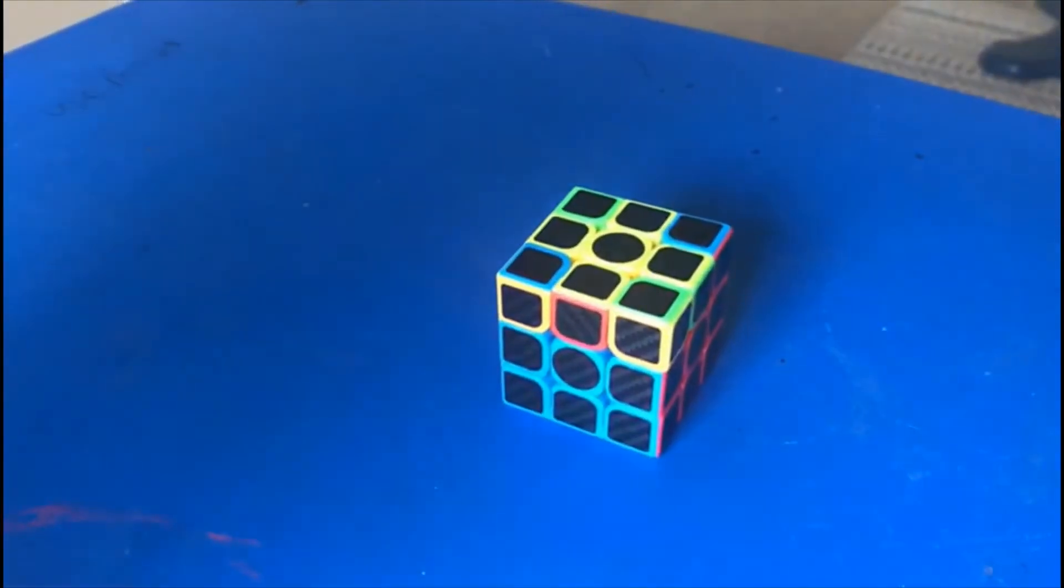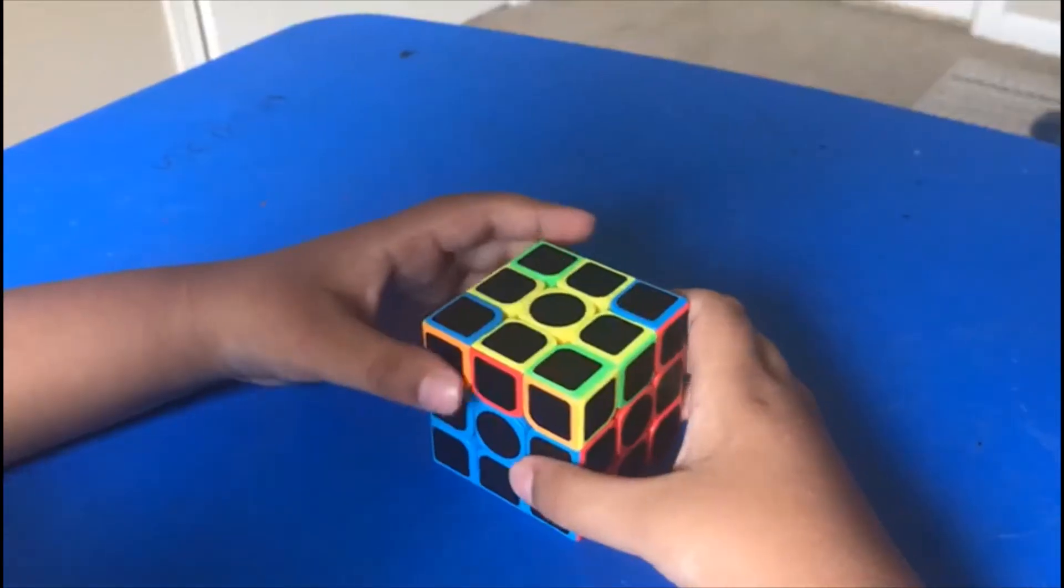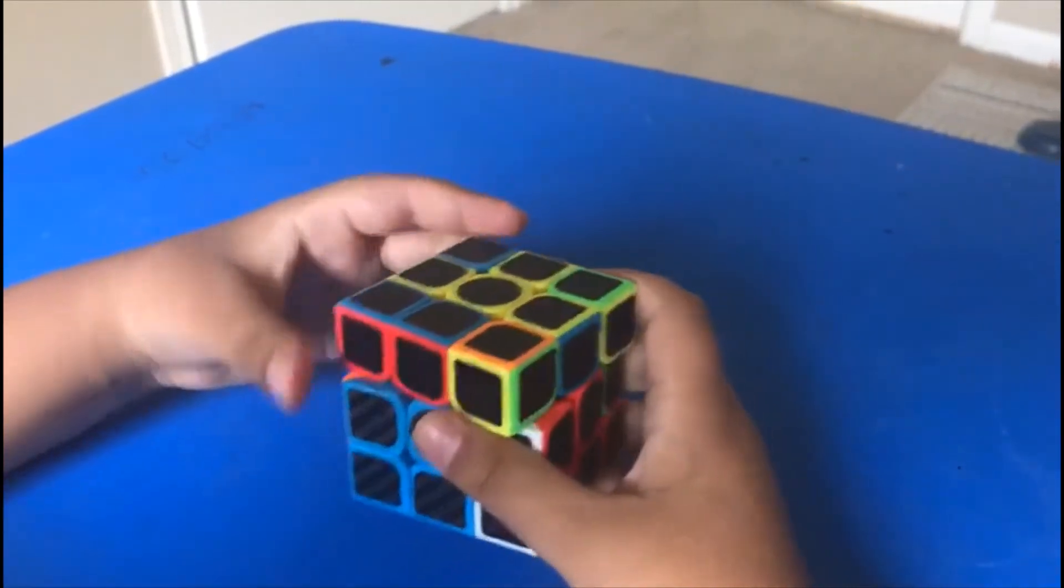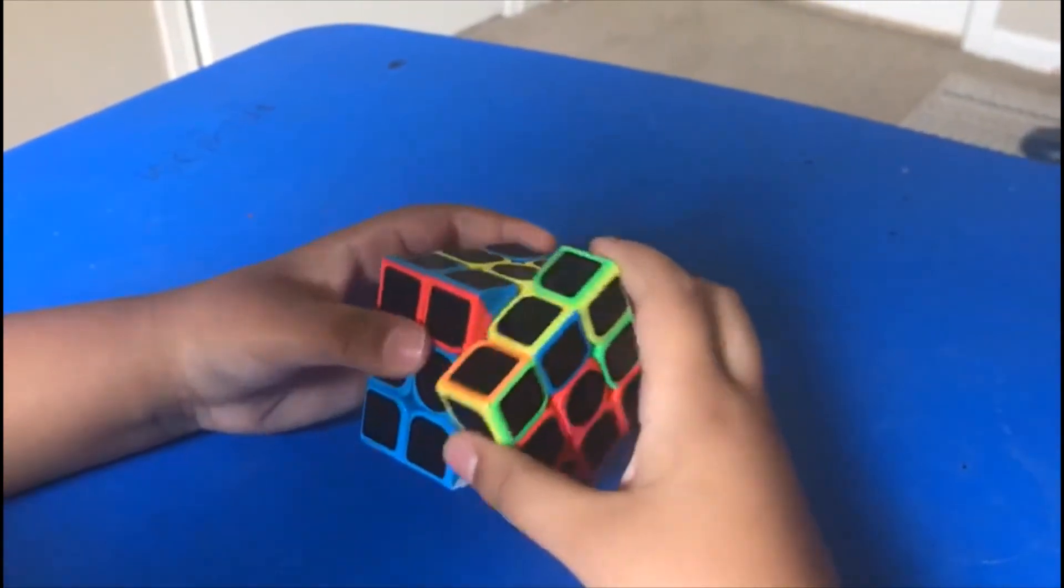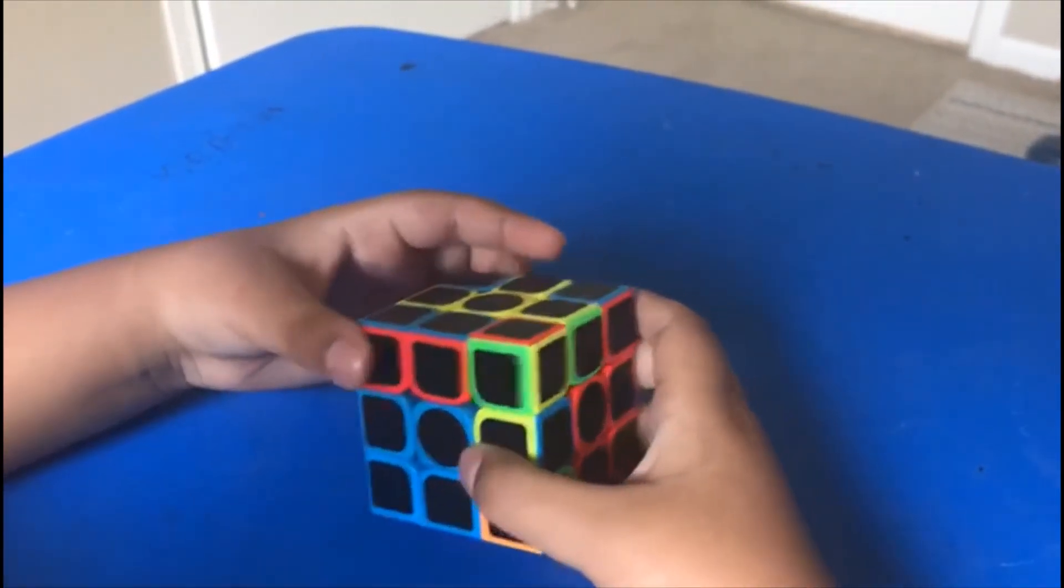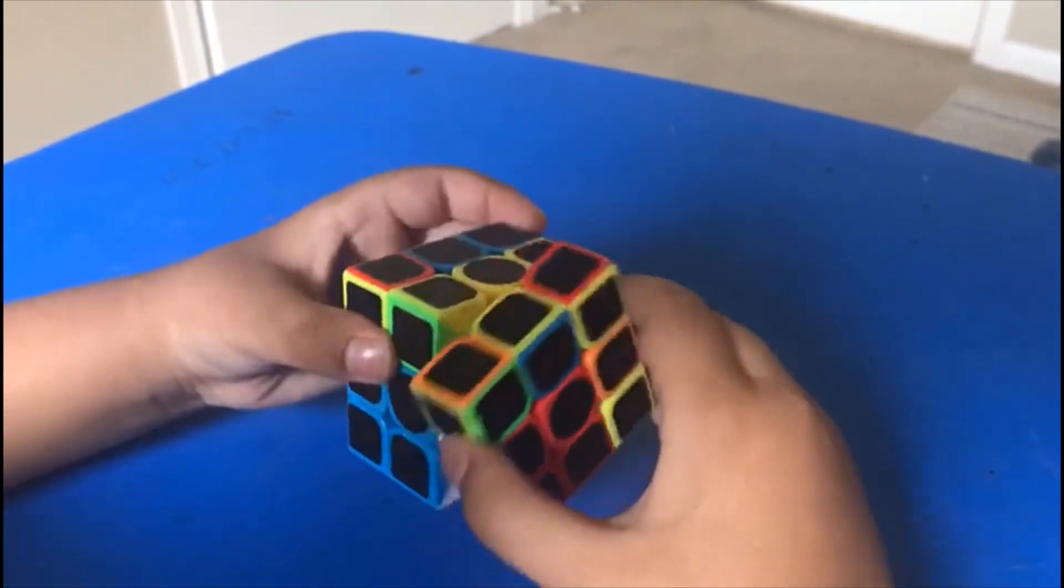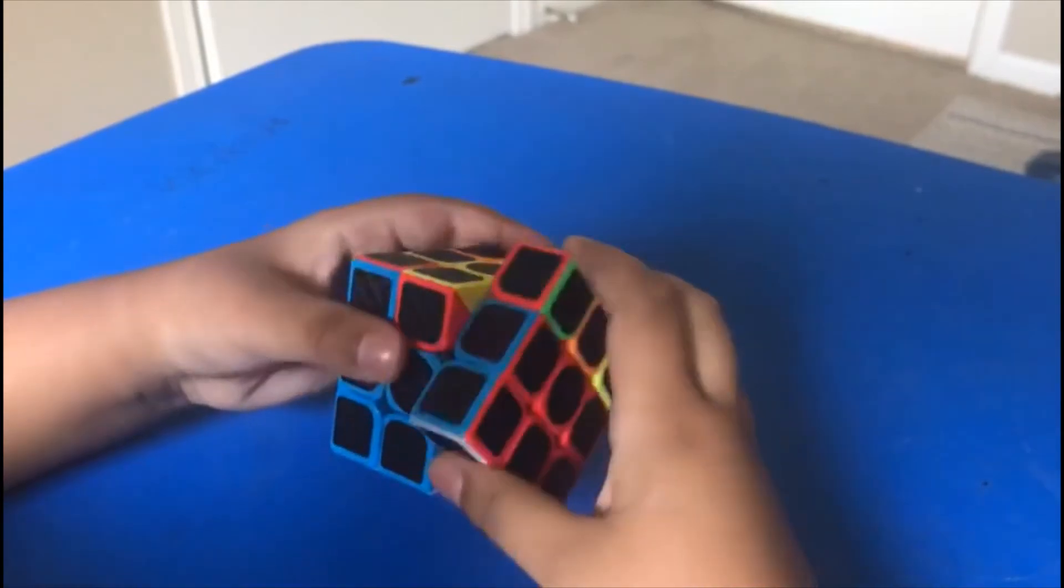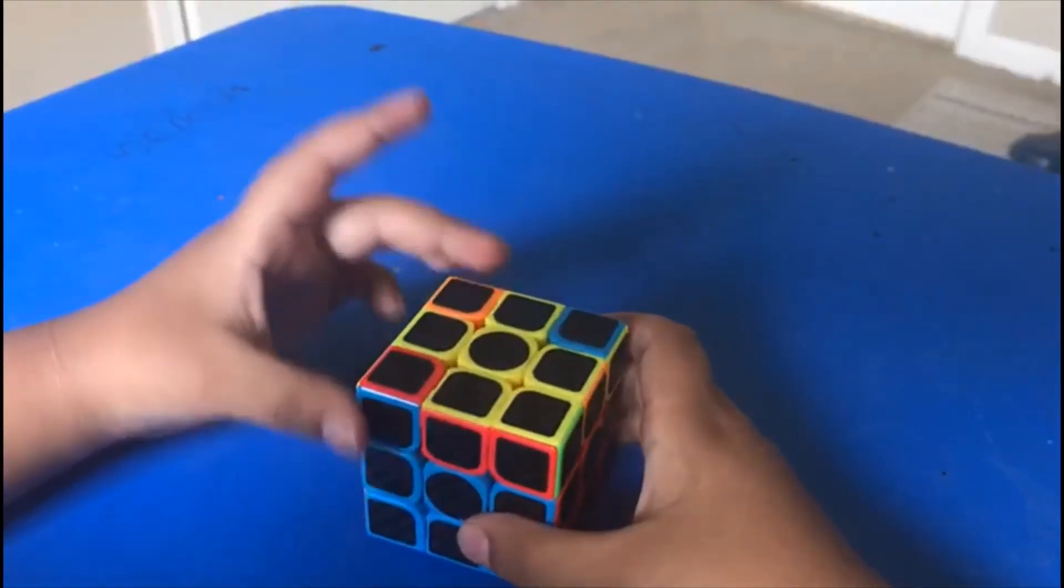Cross on the top. Apply R, U, R prime, U, R, U2, R prime. We got a fish.